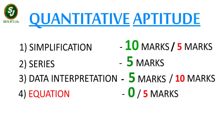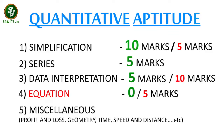The last part of Quantitative Aptitude is the miscellaneous type questions, which will include Profit and Loss, Geometry, Time Speed and Distance, and all the other topics in the quantitative aptitude section. From this section you can expect questions of 15 marks, but it can be 10 marks also for tomorrow's examination.